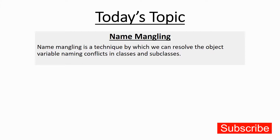Hello everyone and welcome back to the series of Python Unleashed. My name is Ajay and today's topic is name mangling. Name mangling is basically a technique by which we can resolve the object variable naming conflicts in classes and subclasses. Suppose we have a base class with an object variable name and we use the same object variable name in the derived class also — in such a case there is a conflict between two object variable names, and to overcome this issue we have name mangling.